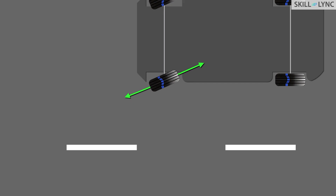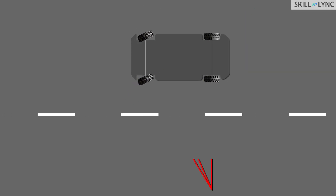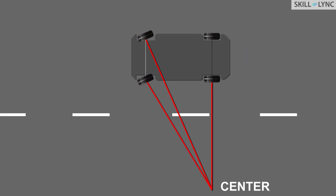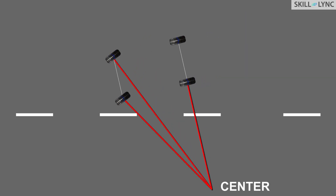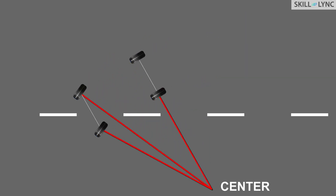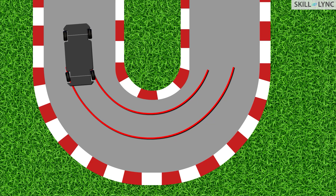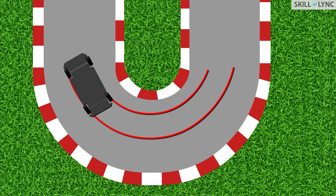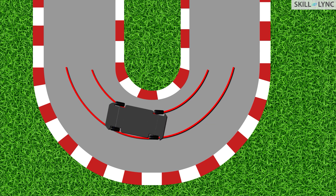This is possible only when the whole car turns. This is done by steering the front wheels of the car, but there's a problem here. During steering motion — that is, when the whole car is turning — the two front wheels of the car will not be covering the same distance.